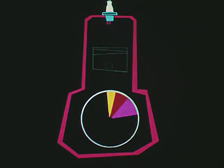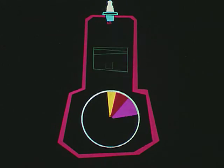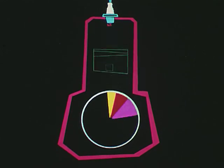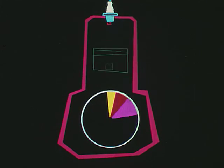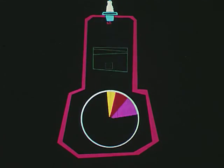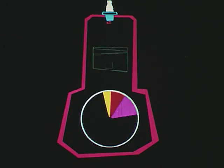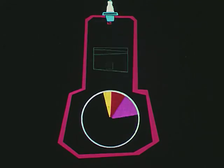But what if we speed up the engine without changing the spark timing? Since it takes just as long for spark, combustion, and power push to take place, the faster the engine rotates, the more the spark should be advanced. Some means must be provided for changing the timing to suit different speeds and conditions, an automatic spark advance.